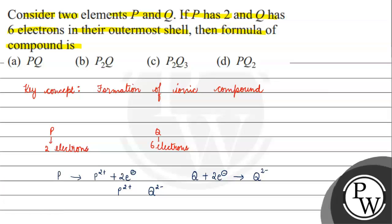They also form an electrovalent bond. So these two charges are equal, which is why the compound forms like this — the charges balance out to form a neutral compound.